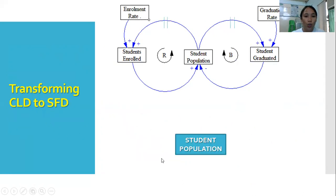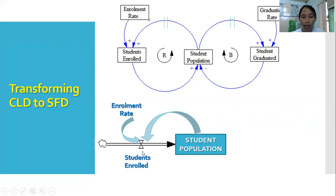Now, how do we transform CLD to SFD? From this causal diagram, this student population is our accumulation of student enrollment. Our stock here would be student population. What influences this student population? What makes our student population increase and decrease? First is our student enrollment as our inflow. Students enrolled is influenced by our enrollment rate. If enrollment rate increases, students enrolled will also increase, which leads to increase in student population.